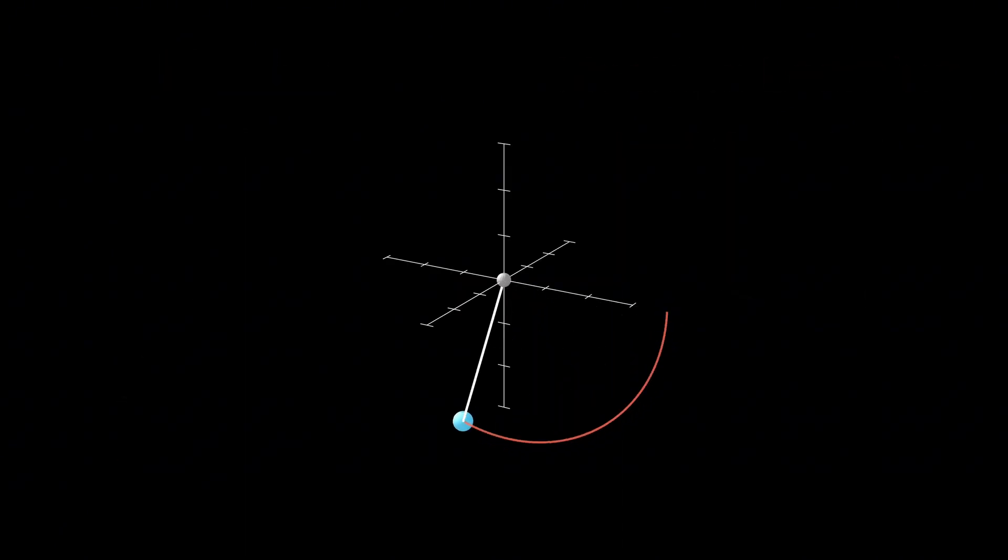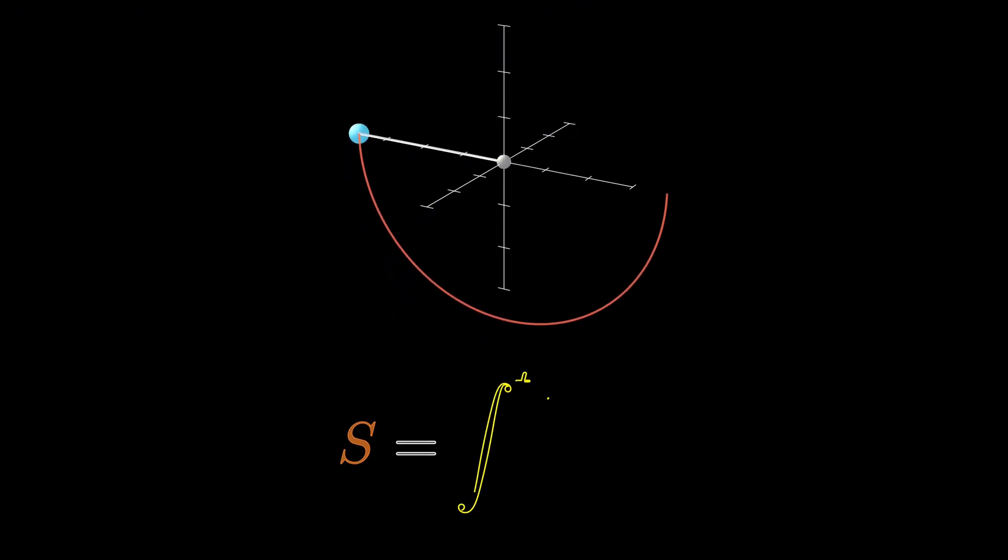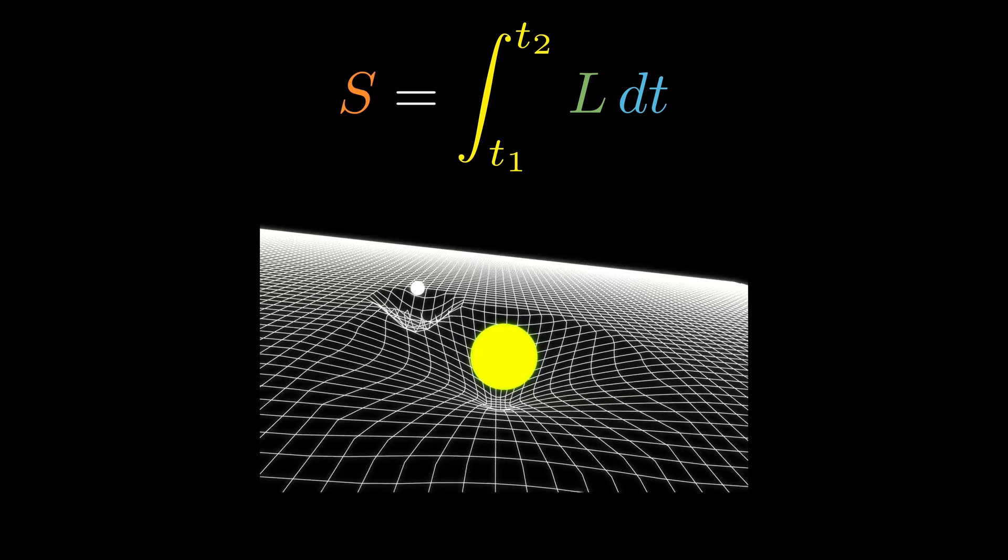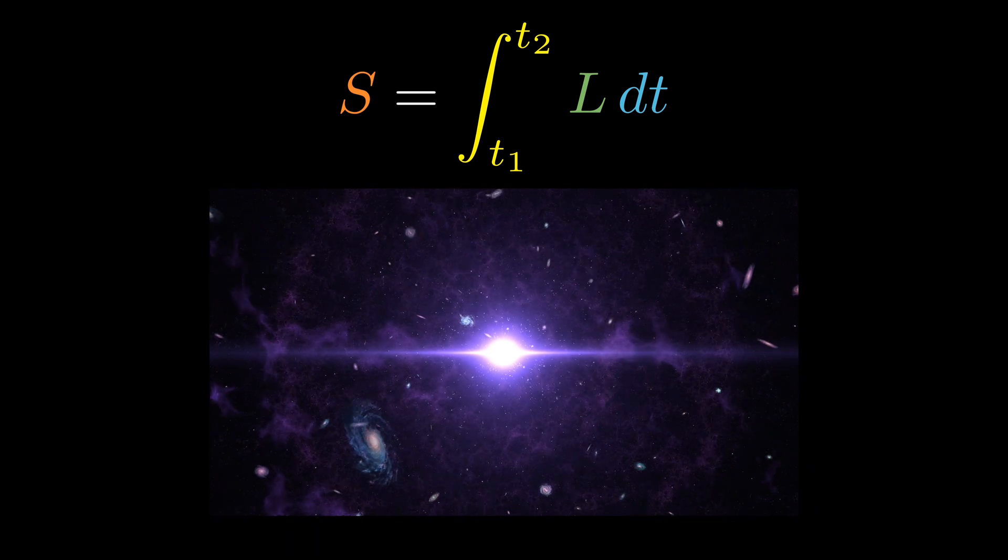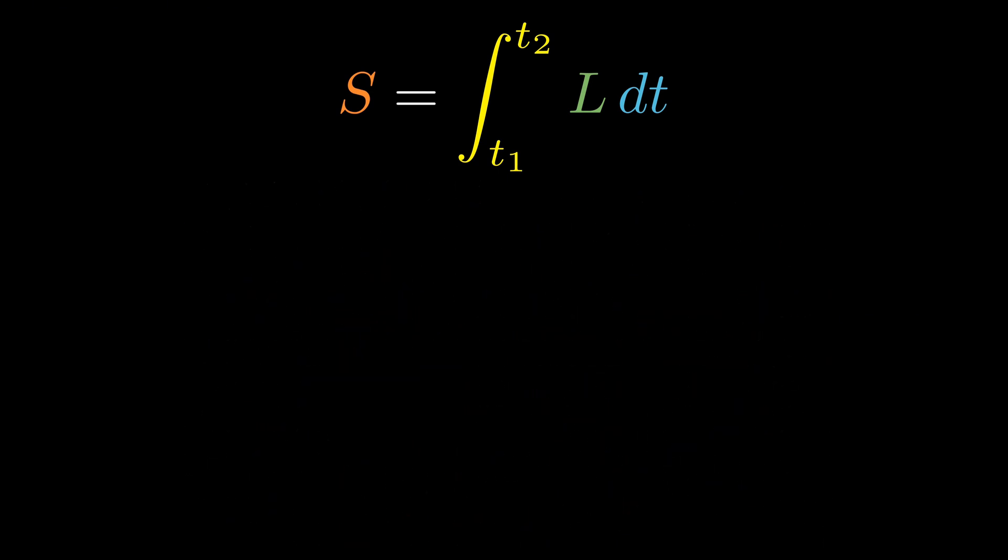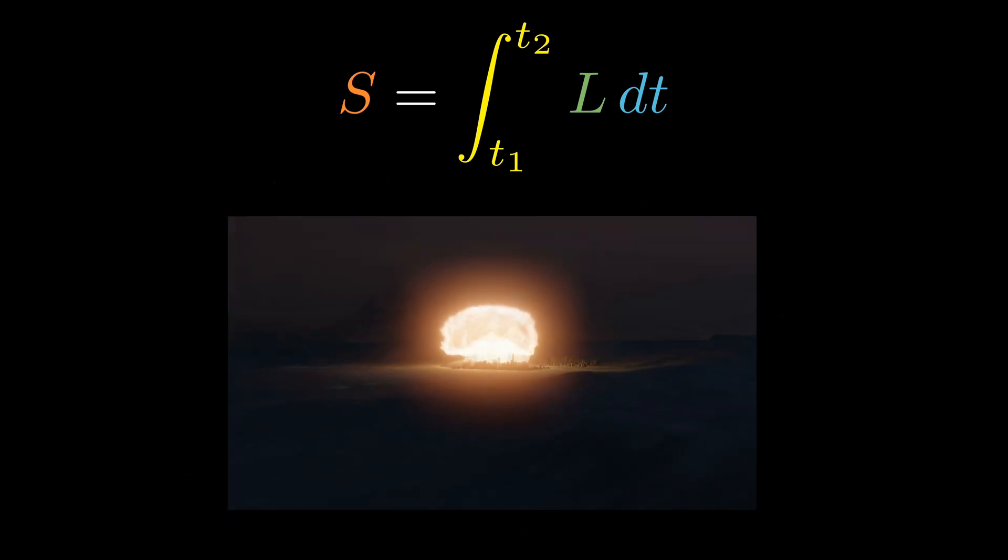Let's go back to our pendulum. Its action is the integral of the Lagrangian over time. This single mathematical form appears everywhere in physics. The motion of light, the curvature of space-time, the expansion of the universe, the behavior of electric and magnetic fields, the weak and strong forces that we often observe in nuclear reactions, all follow from minimizing this same mathematical quantity. In short, the action in physics is universal.